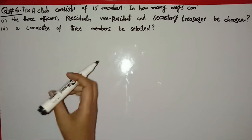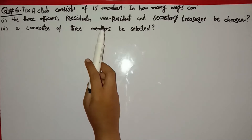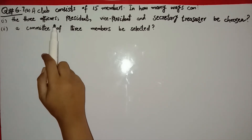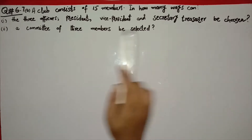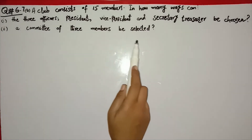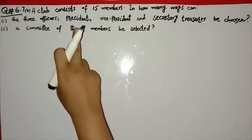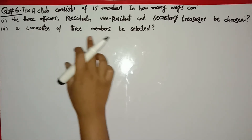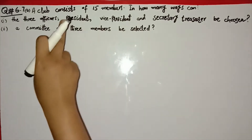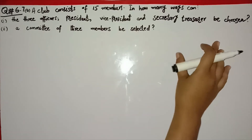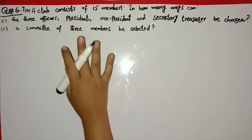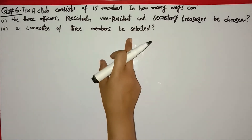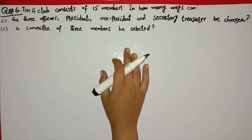Question number 7b: A club consists of 15 members. In how many ways can, first, three officers — president, vice president, and secretary-treasurer — be chosen? Second, a committee of three members be selected? In part one we choose 3 specific role-based members, and in part two we choose any 3 members from 15 with no defined roles.